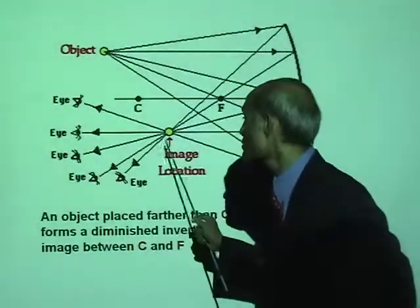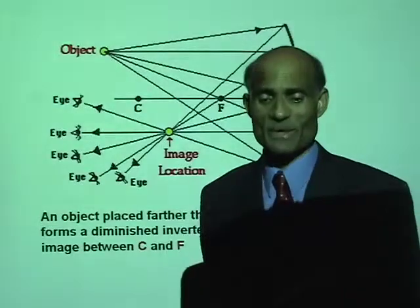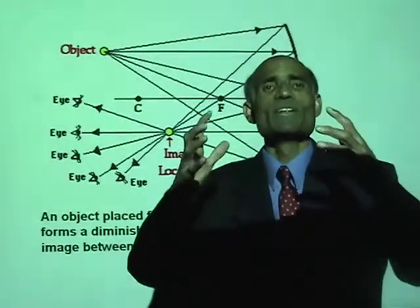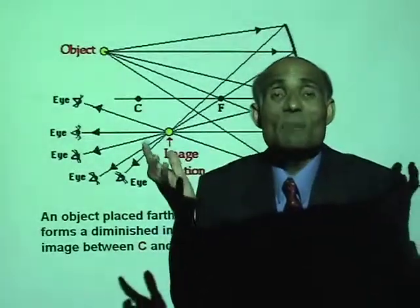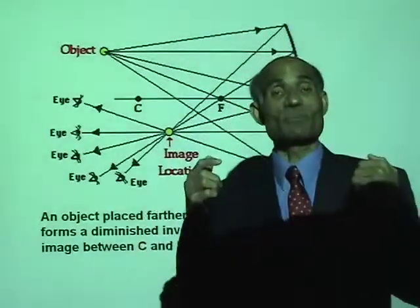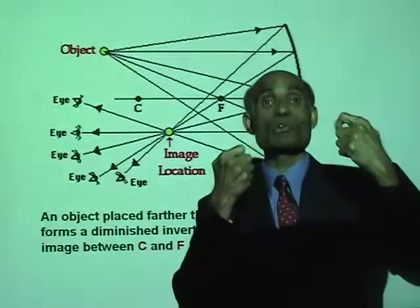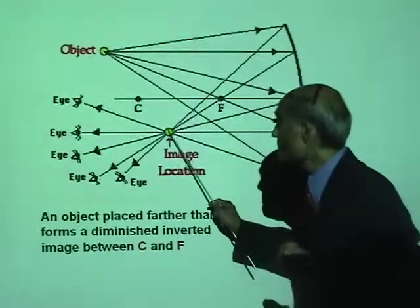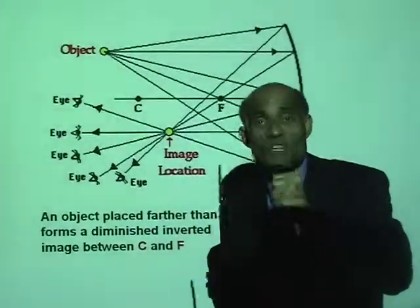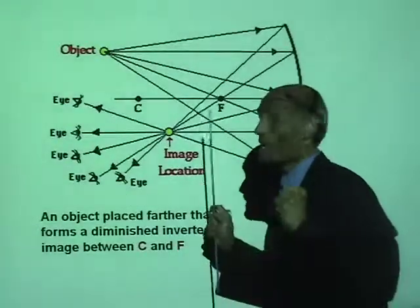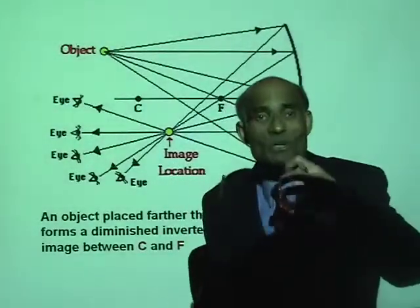There is a big difference between this image and the image we saw in the case of a plane mirror. In the case of the plane mirror, it was an illusion — light rays did not really meet where the image was formed. But this image, due to the curved mirror, is formed by the actual intersection of the reflected rays. Therefore we say this image is a real image.